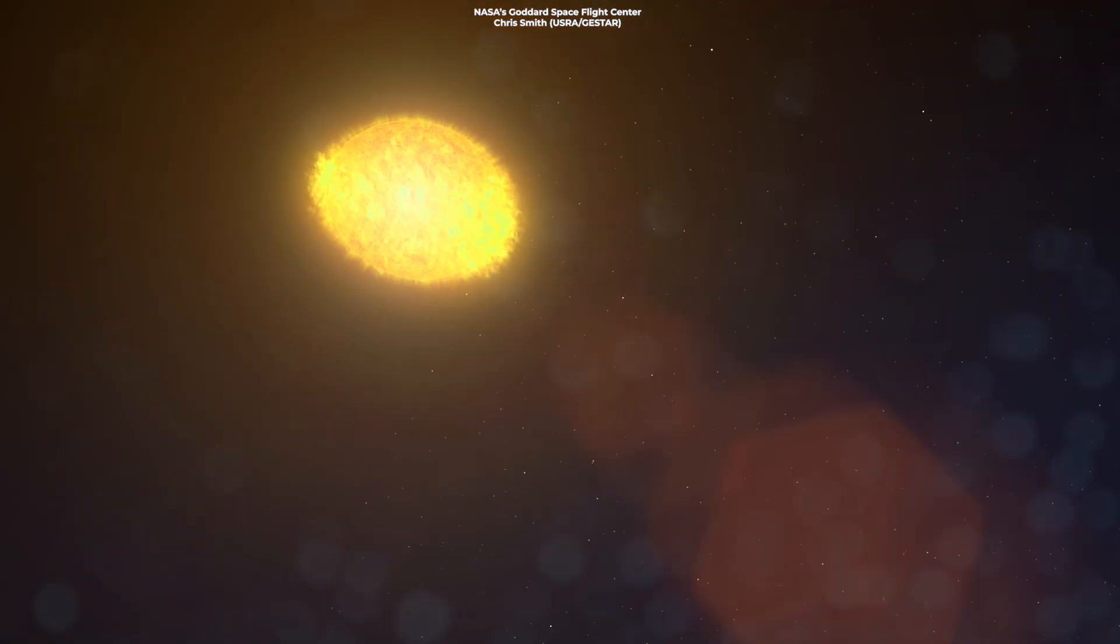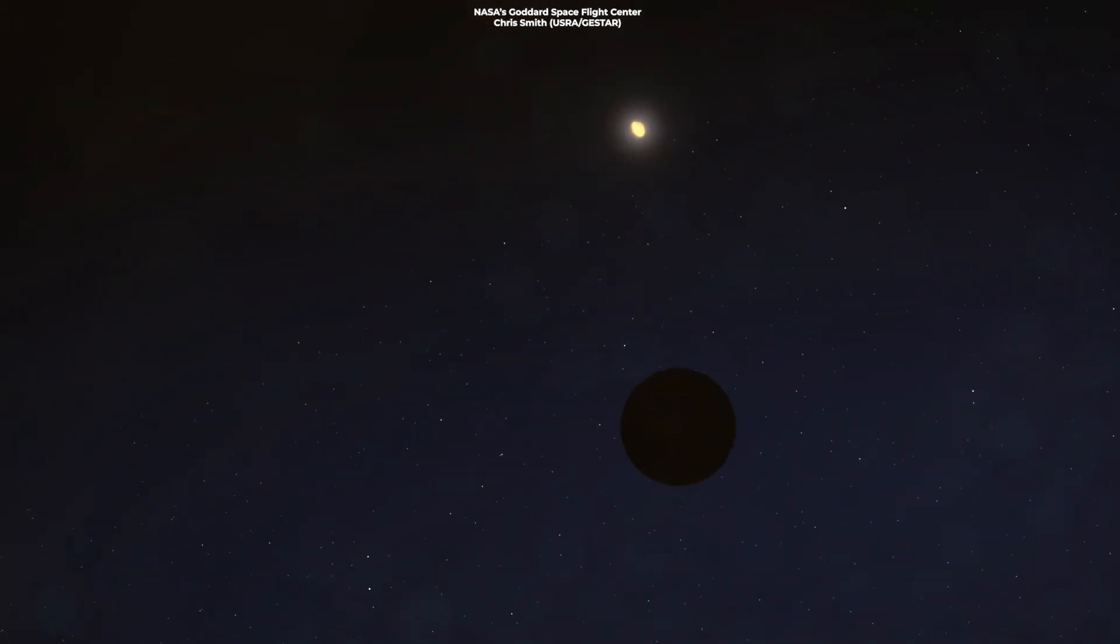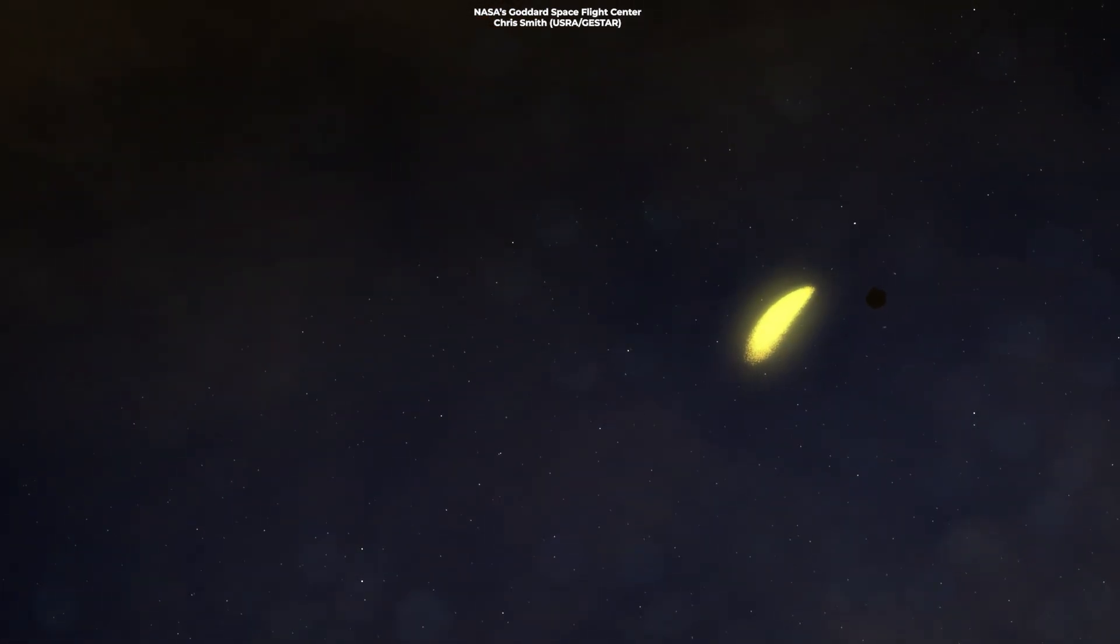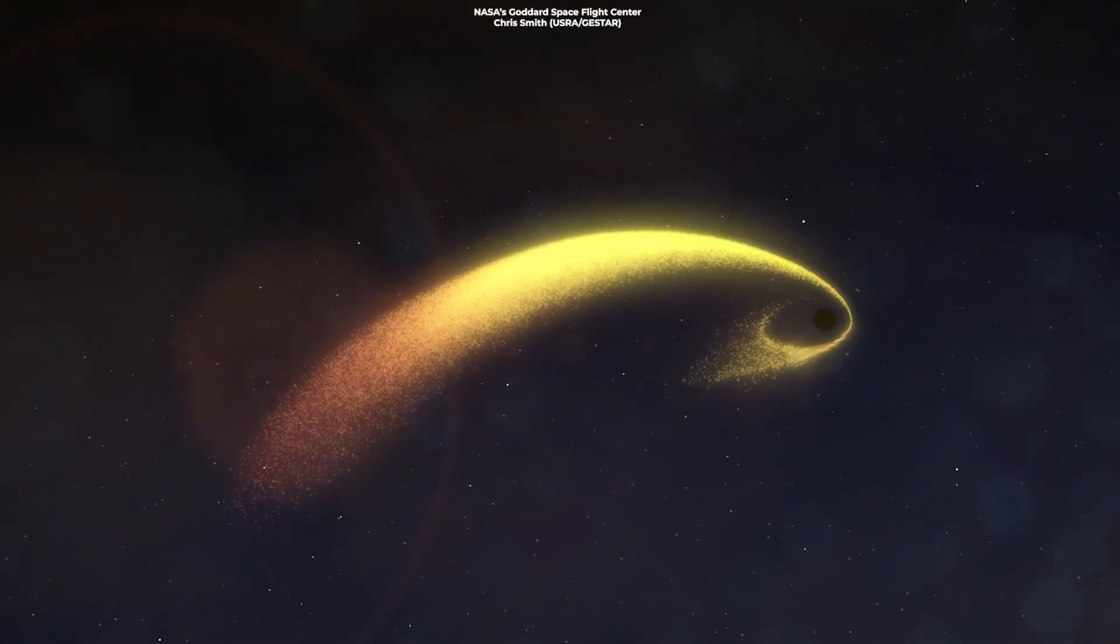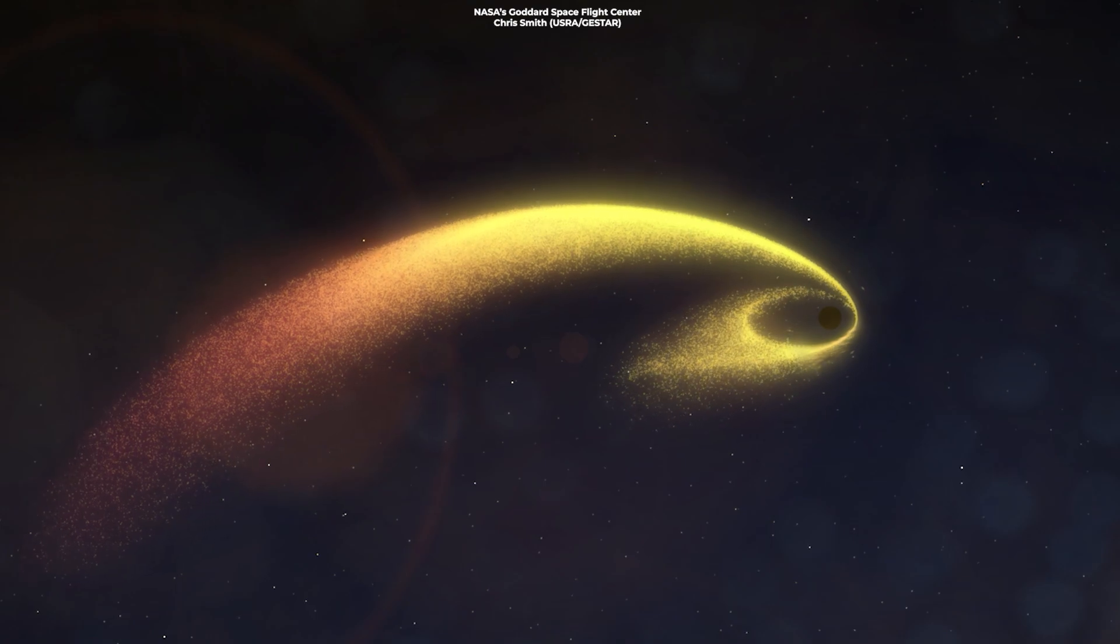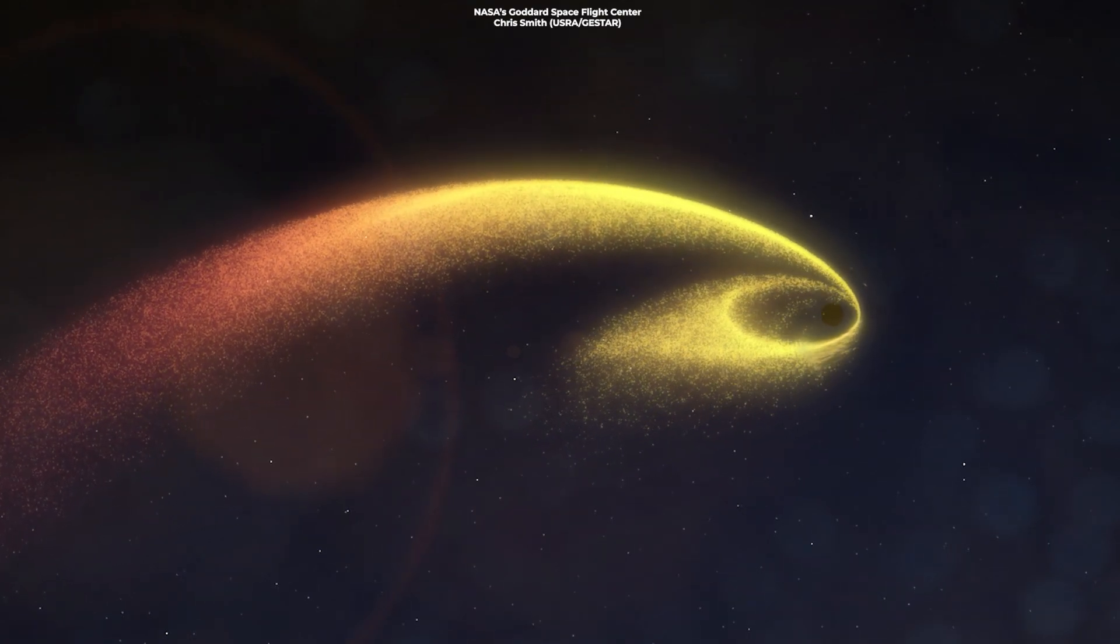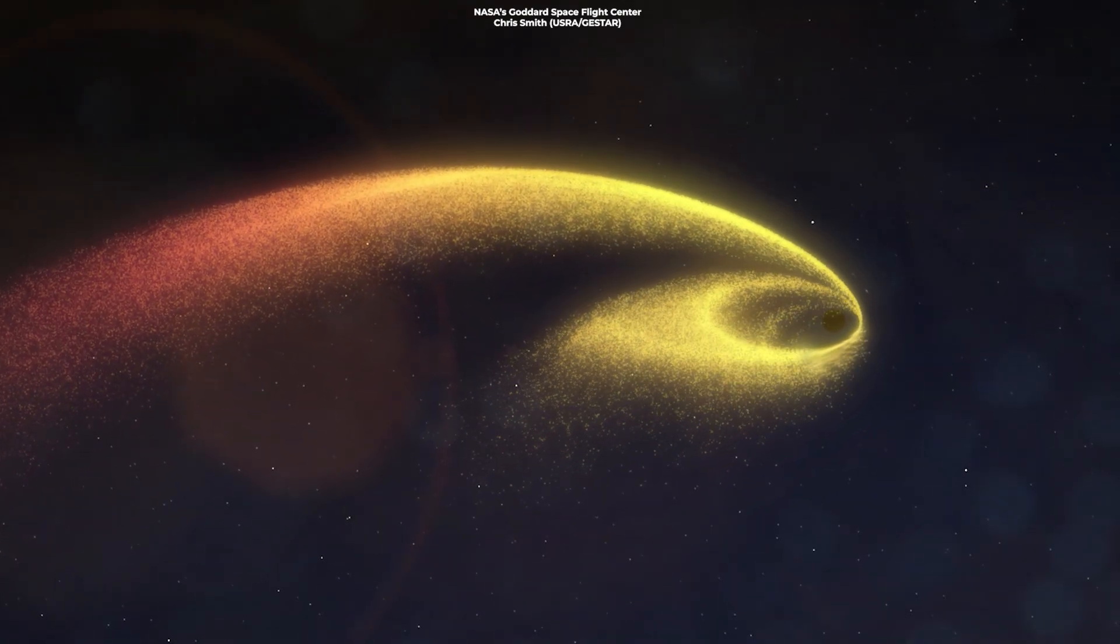When a star approaches a supermassive black hole at the center of a galaxy, it gets affected by it and creates a tidal disruption event, or a TDE. The star is pulled apart and torn to shreds by the black hole's tidal force, experiencing something known as spaghettification.